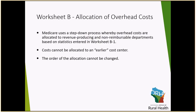B-1 is where we begin that portion of the worksheet with our costs from Worksheet A that are allowable costs, and we step them down utilizing statistics to the revenue and non-reimbursable departments of the entity. Costs cannot be allocated to an earlier cost center, and the order of allocation cannot be changed. Additional cost centers may be added by fragmenting specific cost centers, but it does not change the overall order of the allocations.